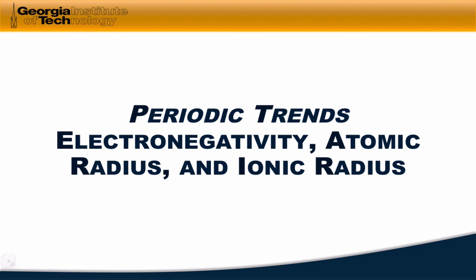I can't emphasize enough that the ability to use periodic trends is a foundational skill in any chemistry course — general, organic, inorganic, you name it. It will be essentially assumed by the time you get to organic chemistry that you're able to apply periodic trends efficiently. And you'll get the opportunity to practice applying periodic trends, especially in electronegativity and atomic radius, over and over again throughout your chemical education.